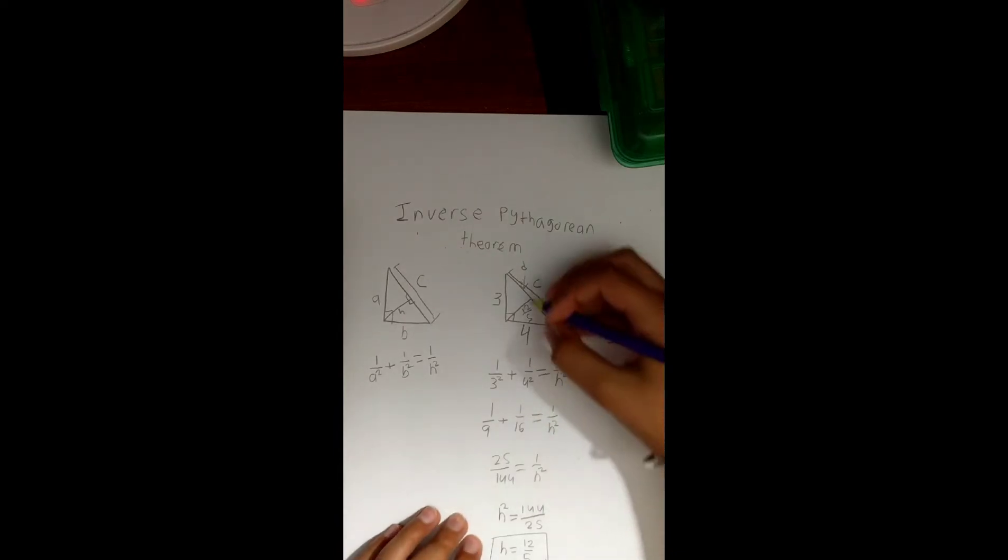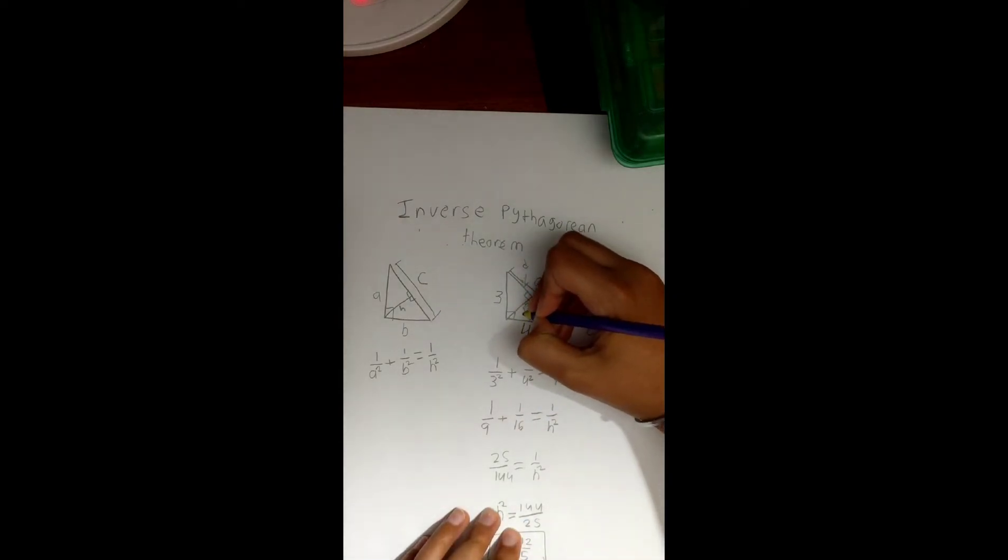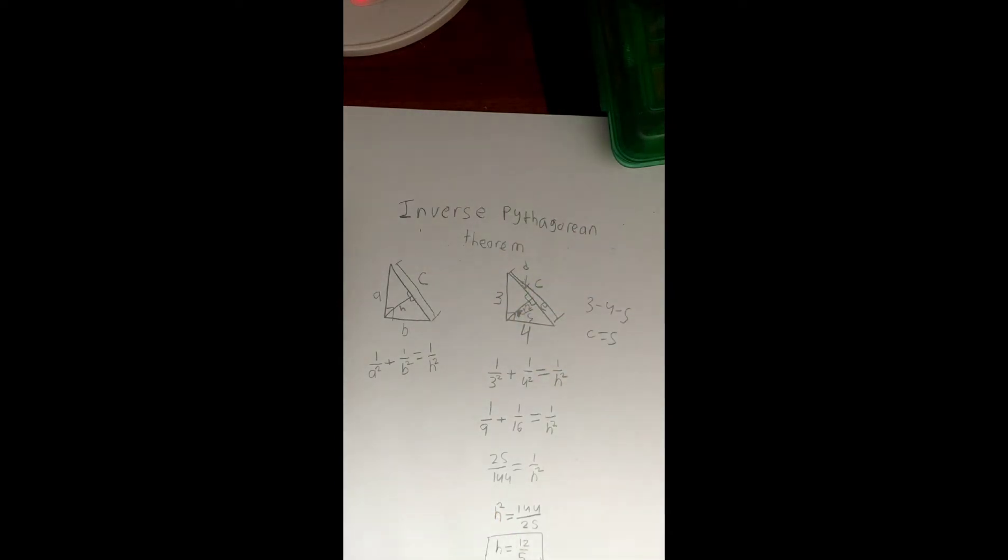Now we know that this is a perpendicular and this is a perpendicular. And if that's the case, then we should be able to solve for d and e. And if the sum of d and e equals 5, then we know that the value of h was correct, and that means the formula that we used to derive h, thus the inverse Pythagorean theorem, is correct.